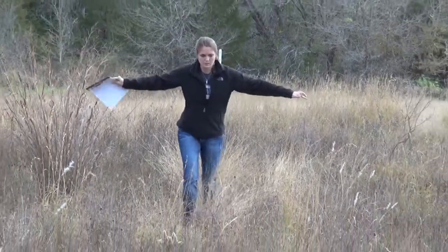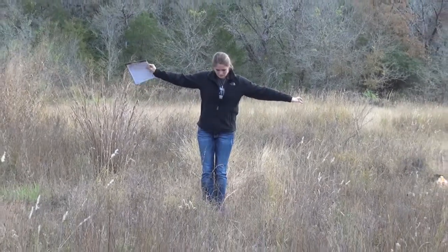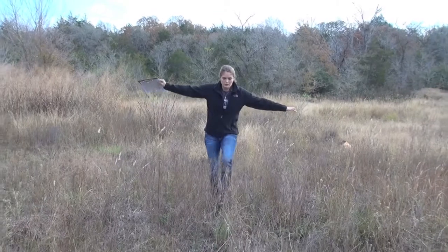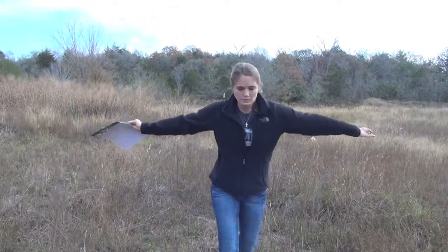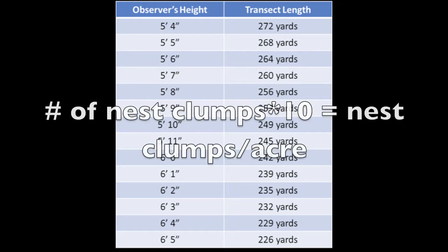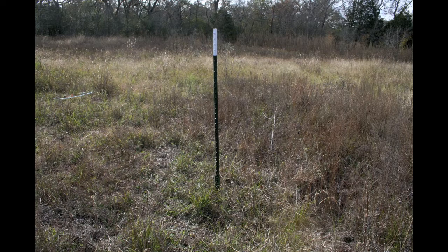Keep in mind that quail require a minimum of 300 nest clumps per acre for adequate habitat. To conduct a nest clump survey, walk in a straight line of defined length, also called a transect, with arms outstretched and counting all basketball-sized nest clumps that fall under your arm span. This allows the surveyor to evaluate a tenth of an acre, though the transect length depends on the surveyor's height. Multiply the total number of bunch grasses counted by 10 to get the estimated number of nest clumps per acre. You can use T-posts to mark permanent transects and examine differences between years.